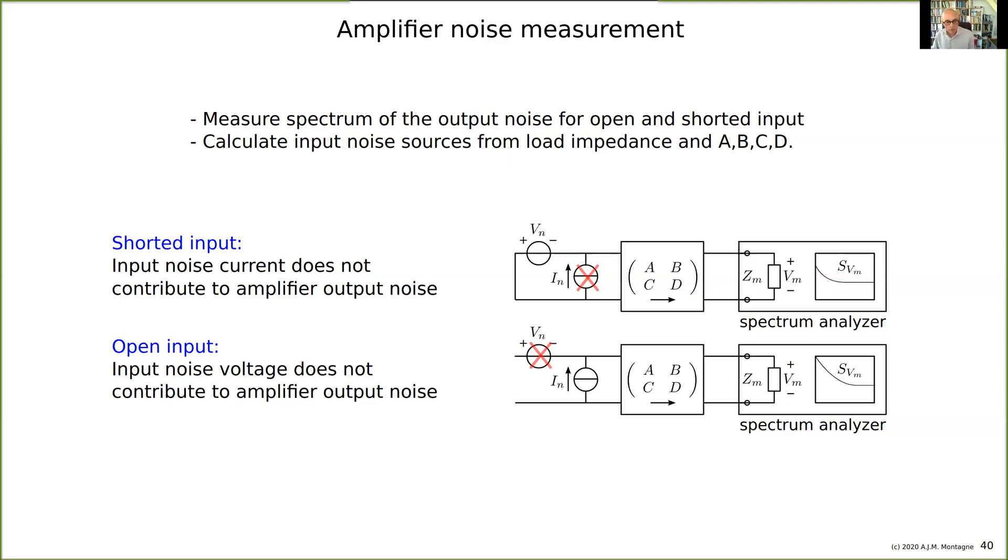It cannot flow any current, and the current of In now flows completely into the amplifier, which means that this is somehow amplified, characterized by ABCD as we have seen in the last presentation, and we can observe the spectrum of In. So this is the spectrum measured, is related to In.